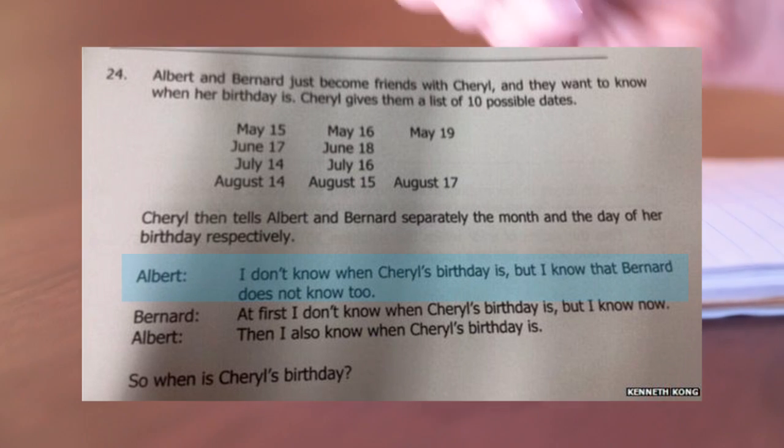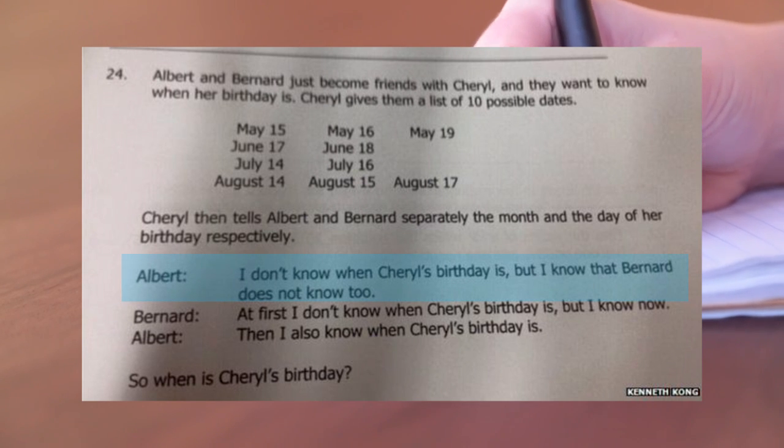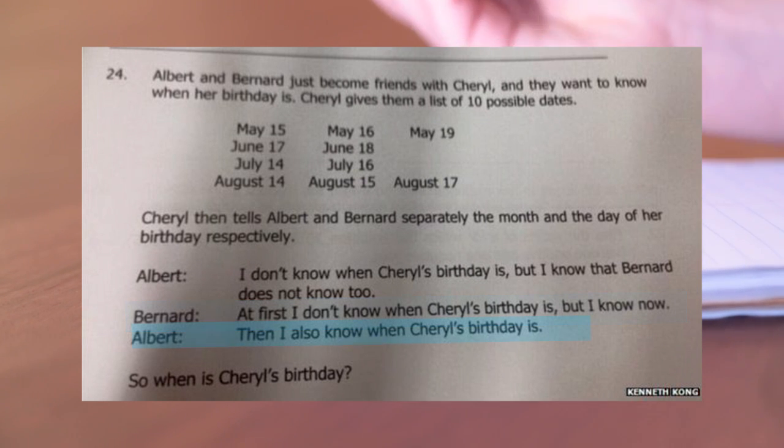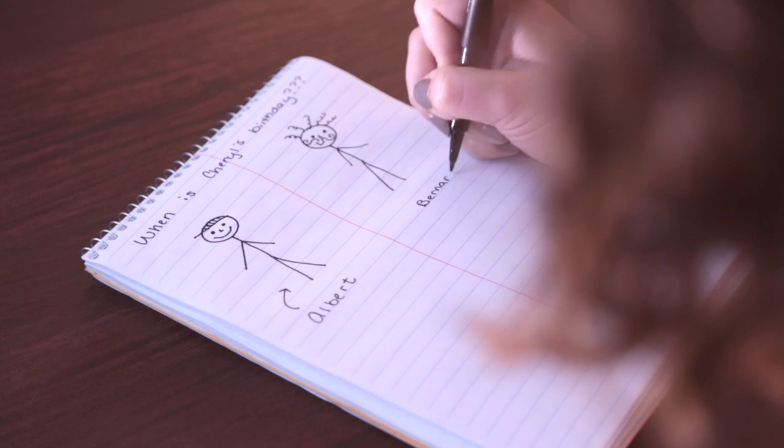Albert said, I don't know when Cheryl's birthday is but I know that Bernard can't know the answer. Bernard said, at first I didn't know when Cheryl's birthday was but now I do know. Then Albert says, then I also know when Cheryl's birthday is.